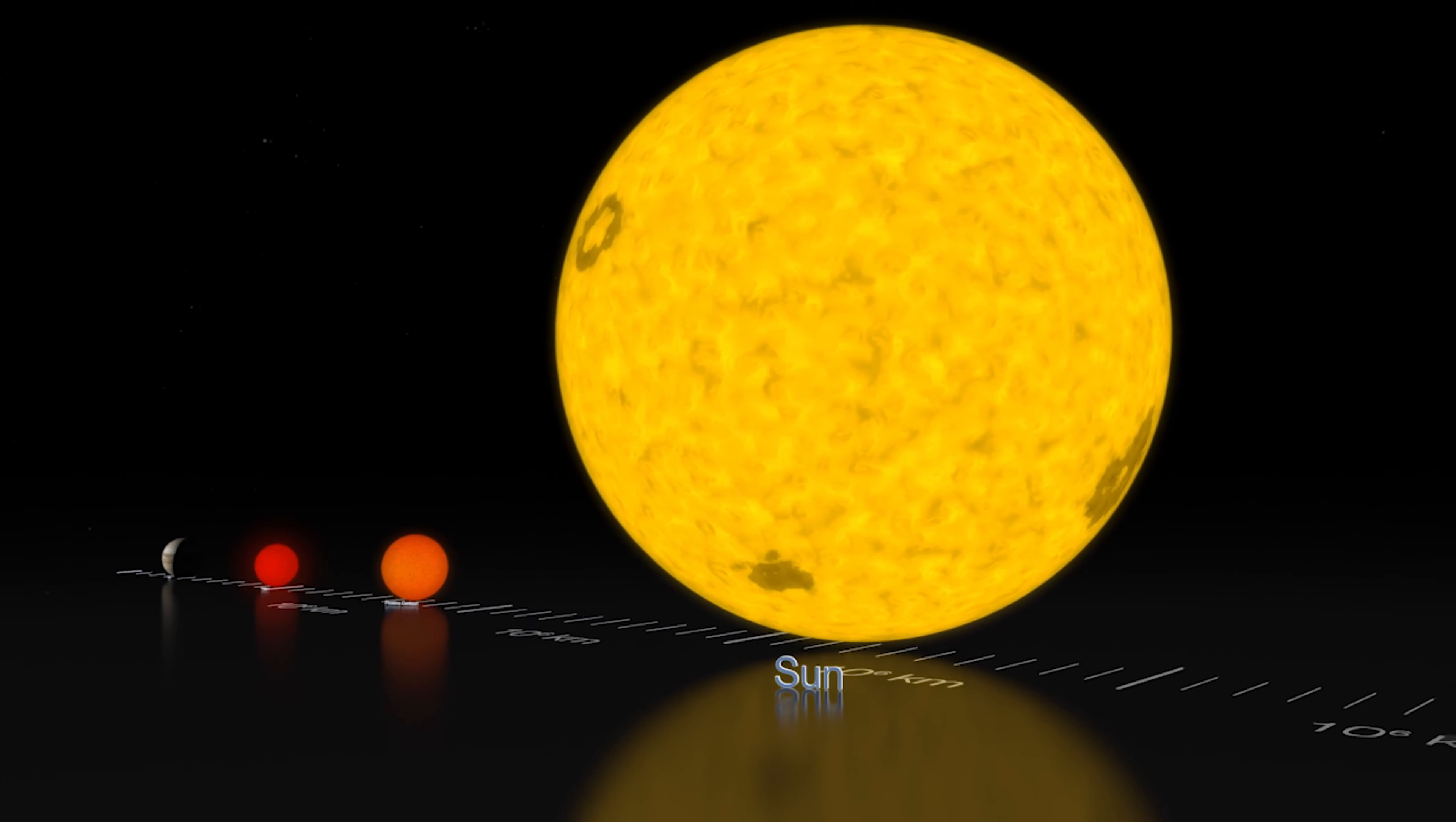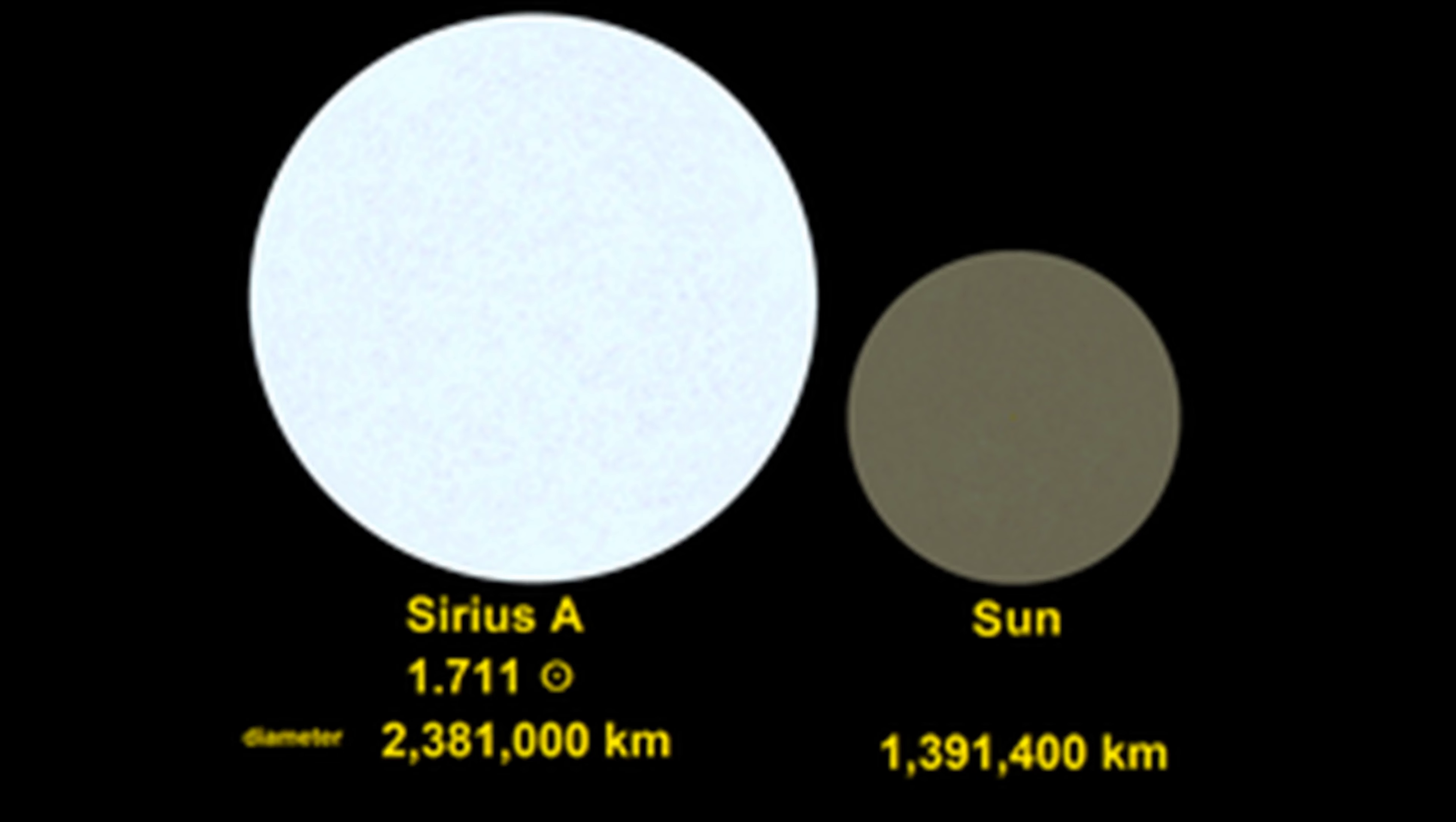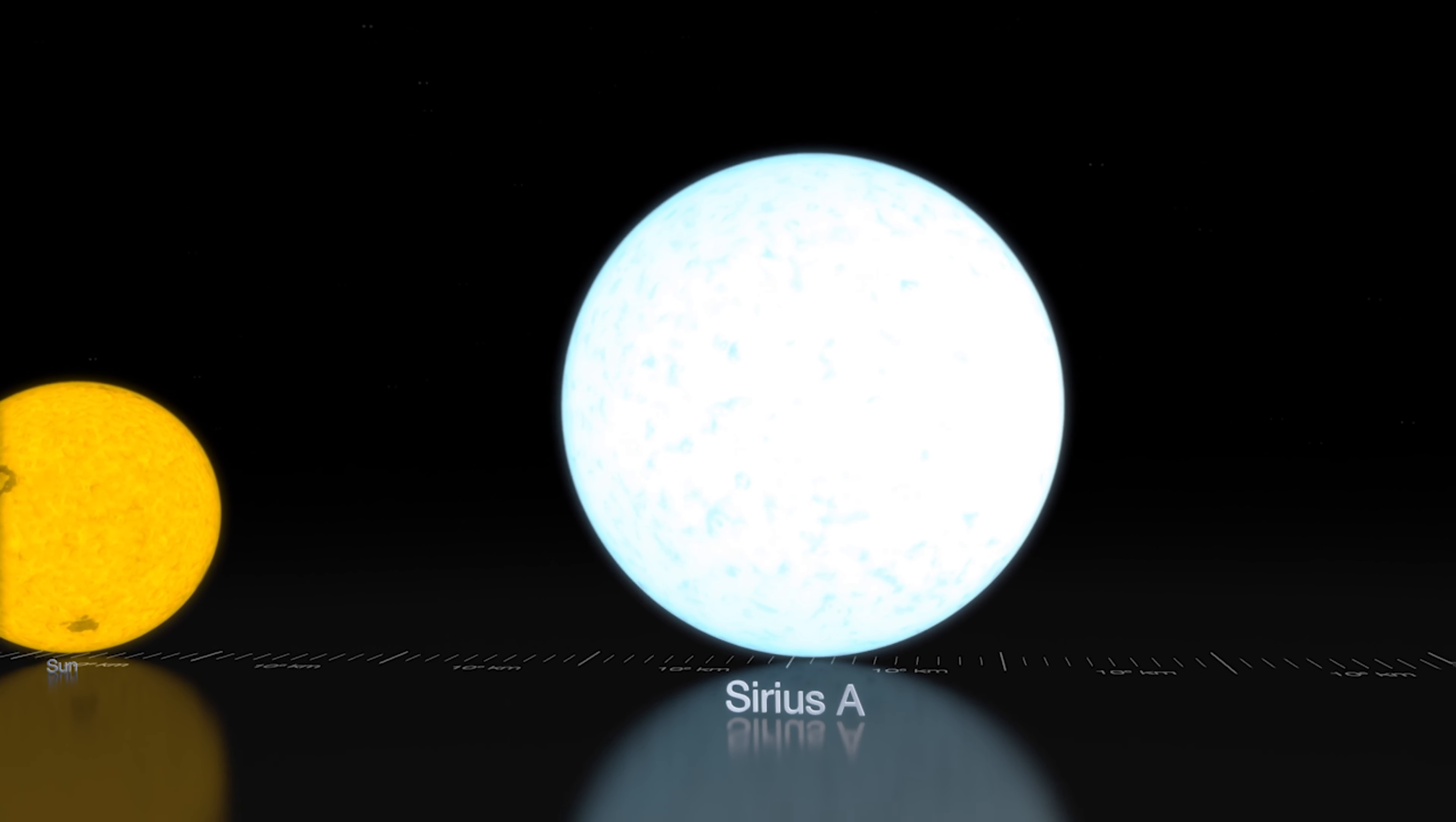The Sirius system is speculated to be between 200 to 300 million years old. Sirius A is about twice as massive as the Sun. Sirius irradiates about 26 times as much energy as our Sun.